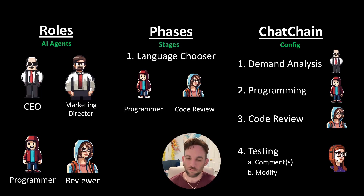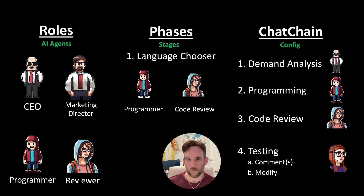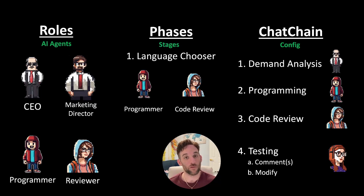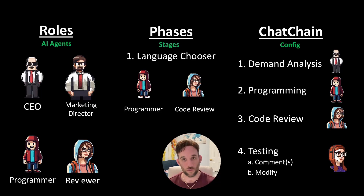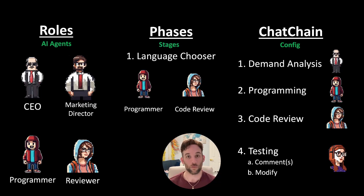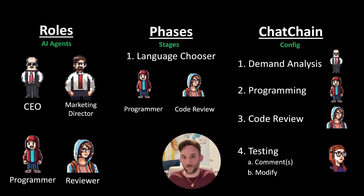The third component is ChatChain. This is a configuration file that tells all the AI agents what tasks to perform and in what order. For instance, you might start with demand analysis, where the product owner and the CEO talk about how to build the software. Then it goes to the programmer, then the code reviewer, then the tester. You can tell the tester to leave comments and tell the programmer what to modify, with a set number of iterations, until at the end you have your built software.